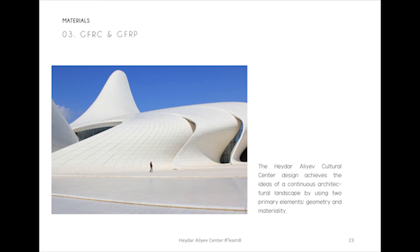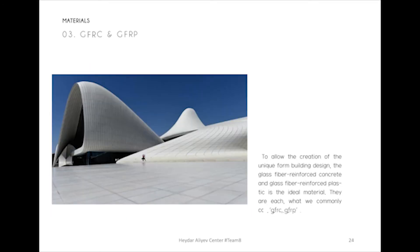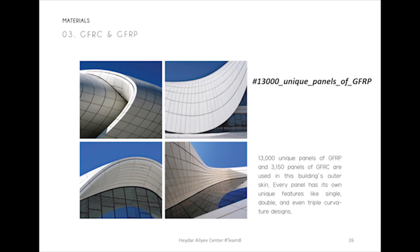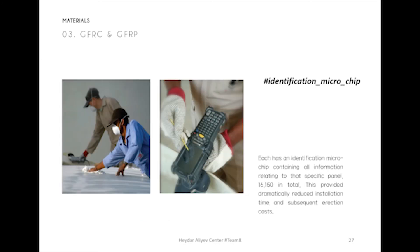The Haidar Alive Cultural Center design achieves the ideas of a continuous architectural landscape by using two primary elements: geometry and materiality. To allow the creation of the unique form design, glass fiber reinforced concrete and glass fiber reinforced plastic — commonly called GFRC and GFRP — are the ideal materials. GFRC is used on surfaces that are walked upon in the plaza spaces, while GFRP is used at the roof cladding panels, which are lighter in weight and have a comparable color and surface finish. There are 13,000 unique panels of GFRP and 3,150 panels of GFRC used in the building's outer skin. Every panel has its own unique features like single, double, and even triple curvature designs, and each has an identification microchip containing all information relating to that specific panel — 16,150 in total. This provided dramatically reduced installation times and subsequent erection costs.